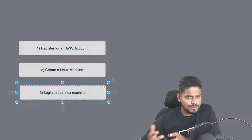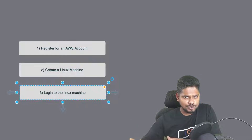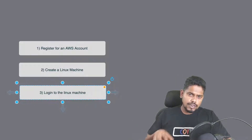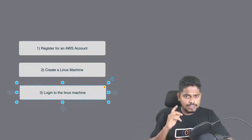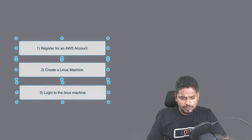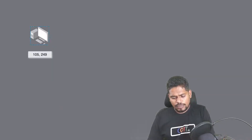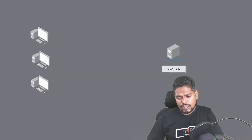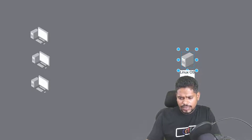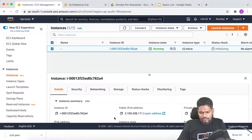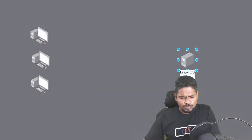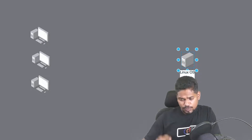I am using a MacBook, but in your case it could be a MacBook, a Linux PC, or a Windows PC — it doesn't really matter what operating system you use on your laptop. All these machines have the ability to remotely log into the Linux machine I just created. The machine has a public IP, and in my case you have already seen that public IP — in your case it could be a different IP.